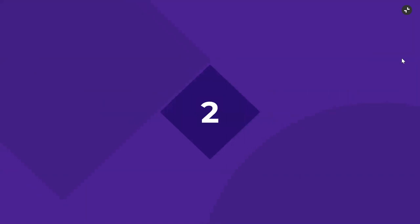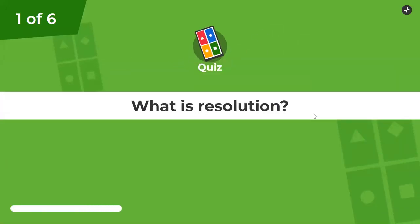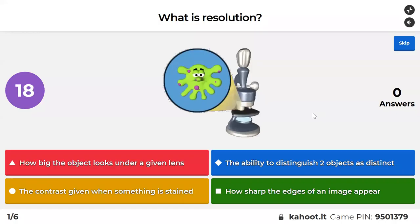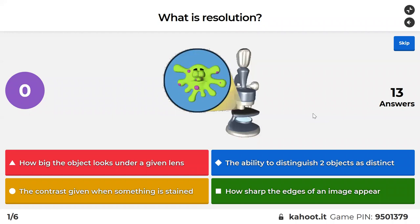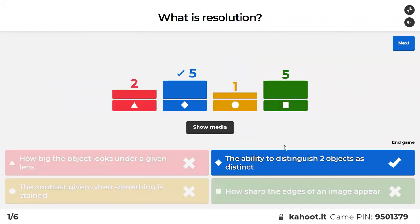Question one: what is resolution? The correct answer is the blue one — the ability to distinguish two objects as distinct. Resolution is a measure of clarity, how sharp and clear an image looks. The green one — sharpness around the edges — that's contrast, the ability to tell two different zones apart. So resolution is clarity.